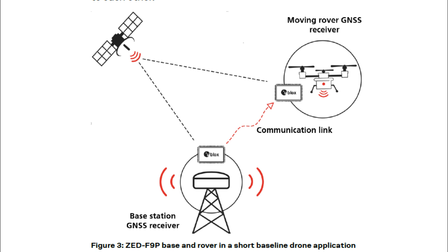You have two stations: a base station that generally stays fixed, and a moving rover — like a drone — that also has a GNSS RTK module. They're both receiving the same signal from the satellite, and they communicate with each other about the phase shift between the two devices. By doing that, they can actually get down to centimeter-level precision in location and orientation, which is pretty amazing.